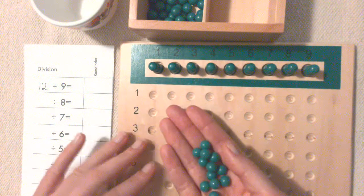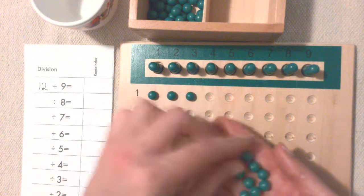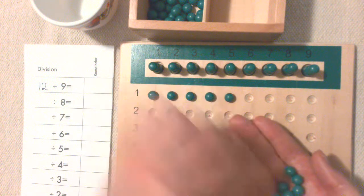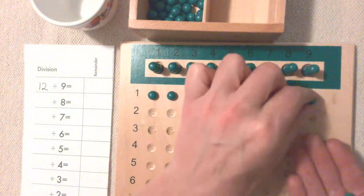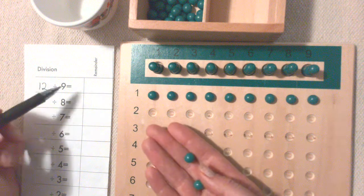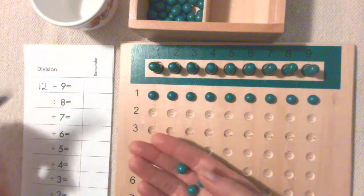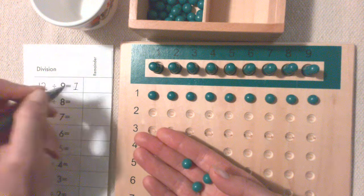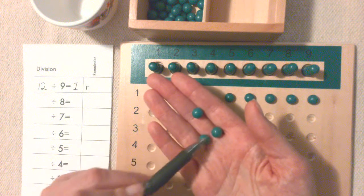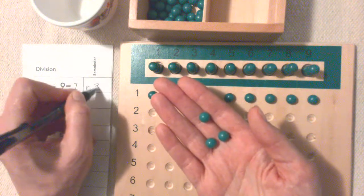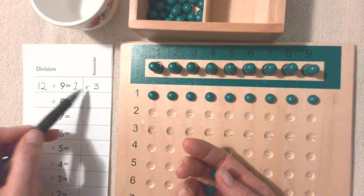And each Skittle gets a bead and the answer is how much one gets. One gets one and there's a remainder of one, two, three. There's three left over. 12 divided by 9 equals one remainder of three.